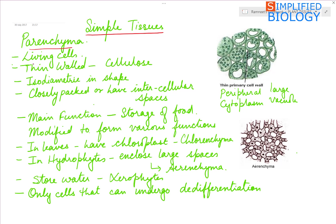Parenchyma are living cells that are thin-walled and the wall is made up of cellulose. They are isodiametric in shape. A Parenchyma cell has a peripheral cytoplasm enclosing a large vacuole within. They are either closely packed or they may have intercellular spaces in between.